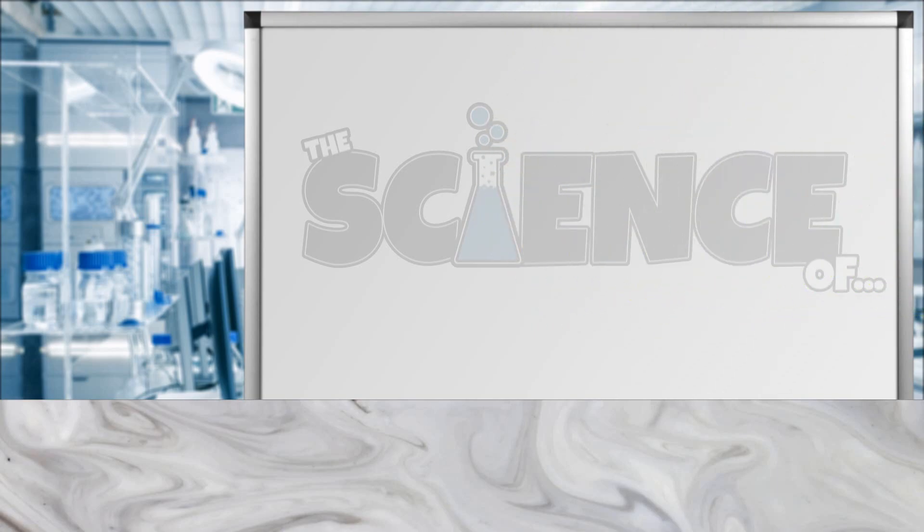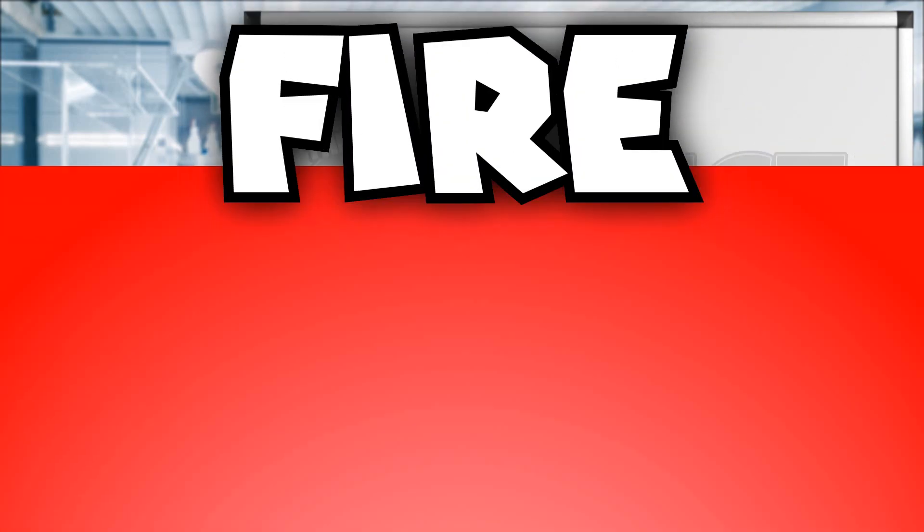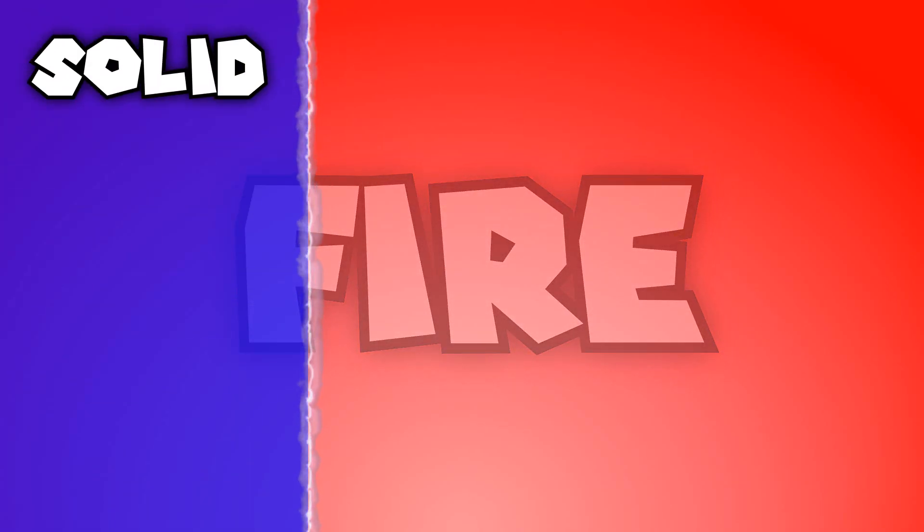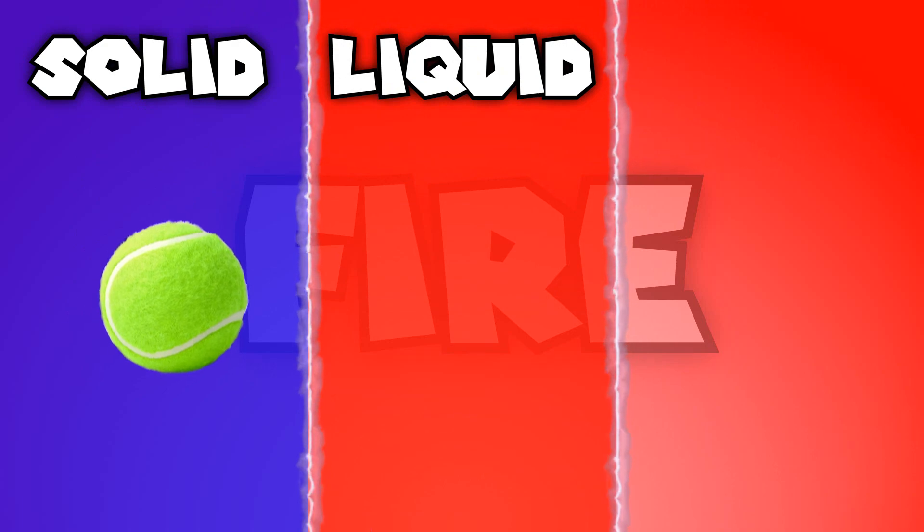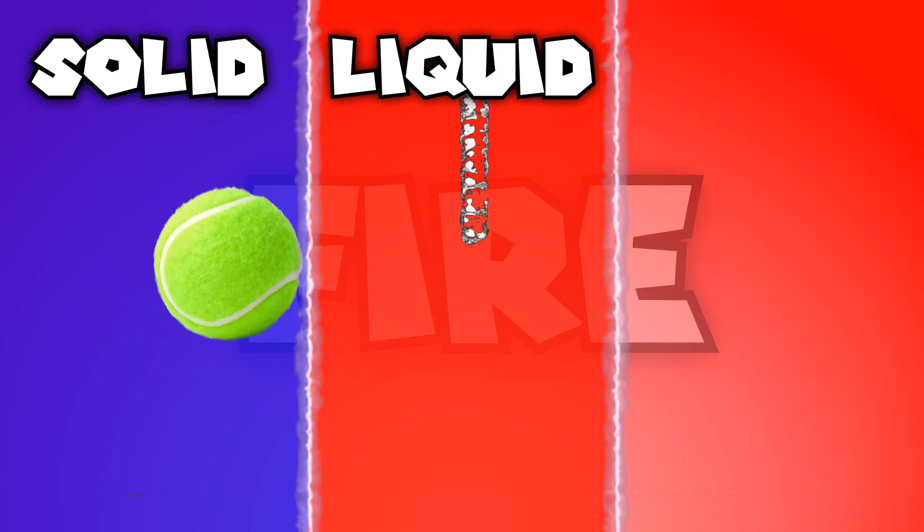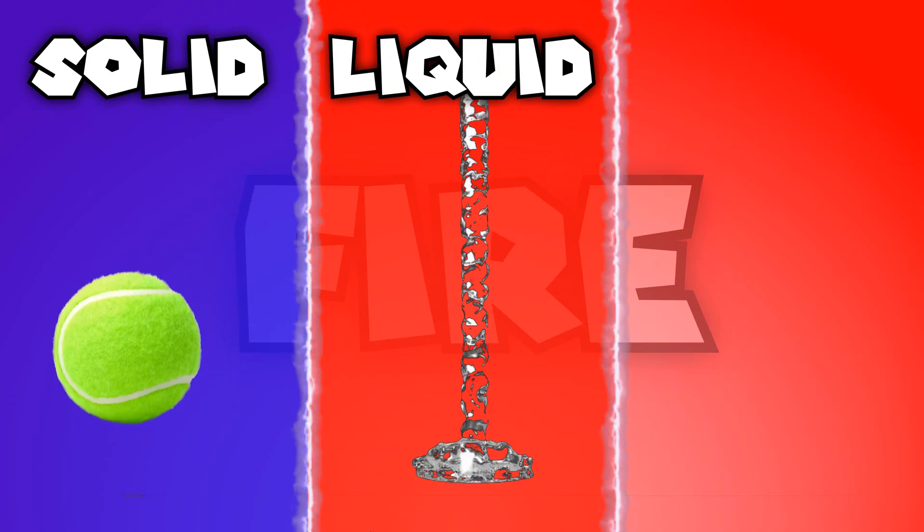But before we take a look at how the actual attack works, we need to look at Fire, and talk about what exactly it is, and why it's so damaging. You see, Fire is unique. We know it's not a solid because it doesn't have a fixed shape. It's not a liquid because it doesn't have a fixed volume, and just from that, you might assume that it's a gas.